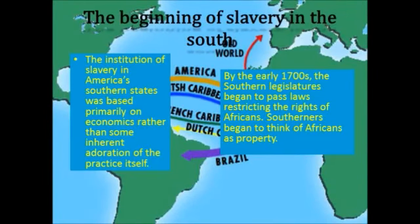The institution of slavery in America's southern states was based primarily on economics rather than some inherent adoration of the practice itself. By the early 1700s, the southern legislatures began to pass laws restricting the rights of Africans. Southerners began to think of Africans as property.